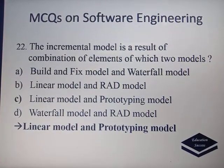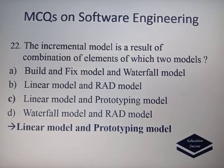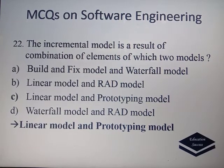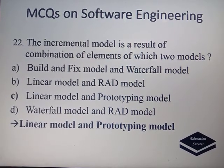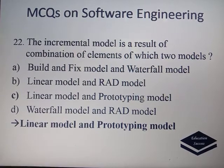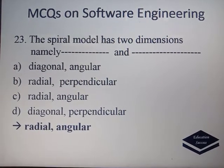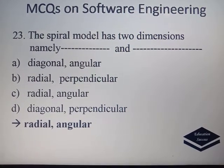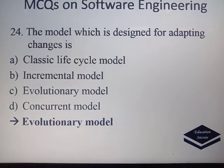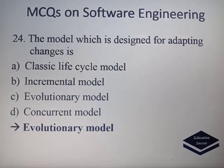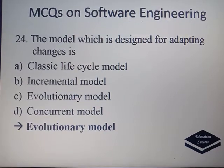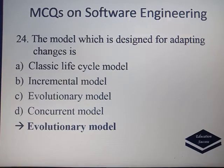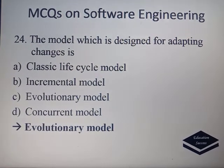The Incremental Model is the result of a combination of the Linear and Prototyping Models, so the correct answer is C. The Spiral Model has two dimensions: Radial and Angular, so the correct option is C. The model which is designed for adapting to change is the Evolutionary Model, which is suited for accommodating changes.